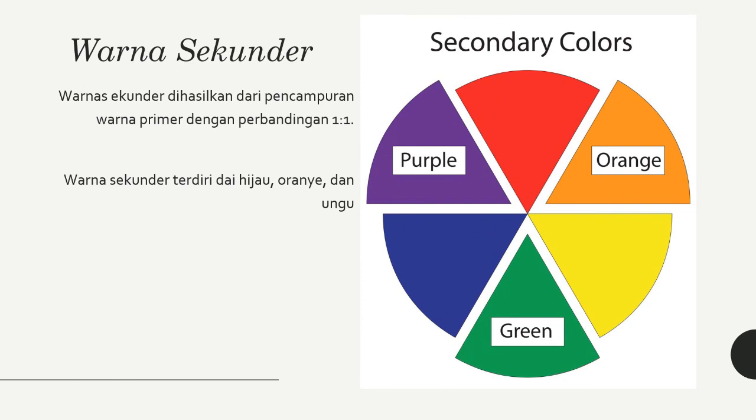Warna Sekunder. Warna sekunder merupakan hasil pencampuran antara warna-warna primer dengan perbandingan proporsi 1 banding 1. Misalnya, warna merah plus kuning menjadi oranye, kuning plus biru menjadi hijau, merah plus biru menjadi ungu. Perhatikanlah color wheel atau lingkaran warna yang ada di samping — bagian yang dikatakan warna sekunder adalah warna yang tepat berada di kanan-kiri dari warna primer.